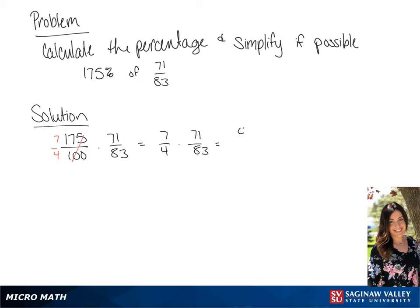Now we're going to multiply, giving us 497 over 332.